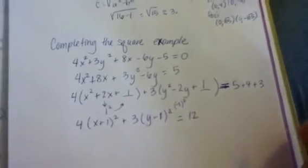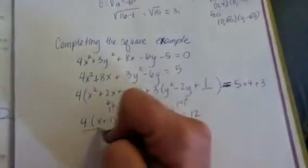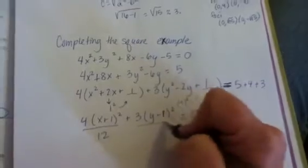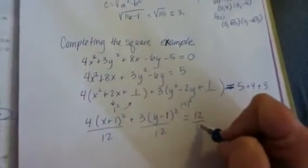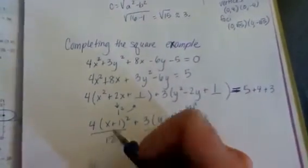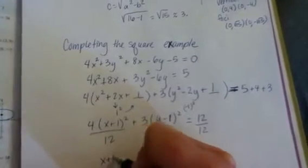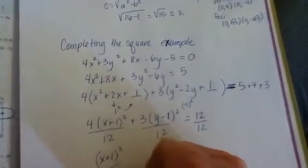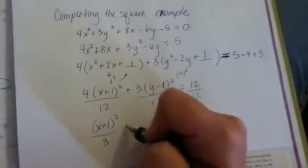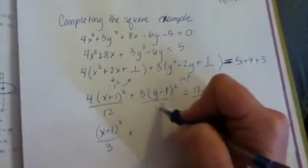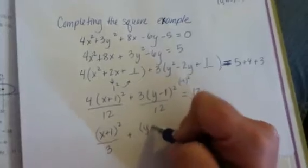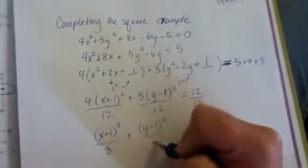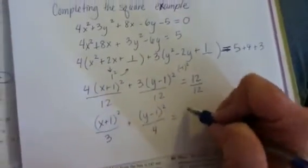So we're almost there. We just have to go through and divide everything by 12. So 4 goes into 12 three times, so that's going to give us x plus 1 squared over 3 plus, and then 3 goes into 12 four times, so we'll have y minus 1 squared over 4 equals 1.